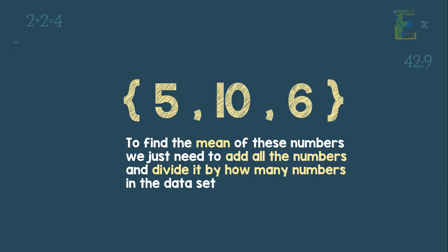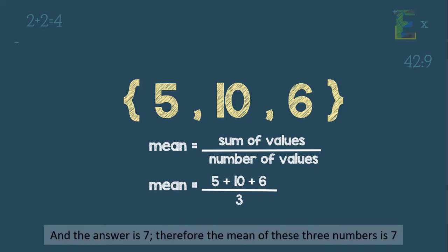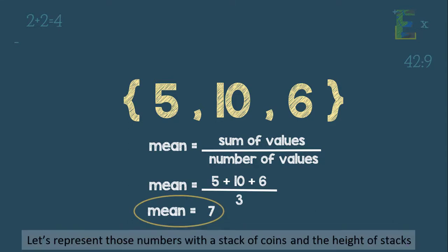To find the mean of these numbers, we just need to add all the numbers and divide it by how many numbers in the data set. So in this case, we need to add 5, 10, and 6 and divide it by 3. And the answer is 7. Therefore, the mean of these three numbers is 7.